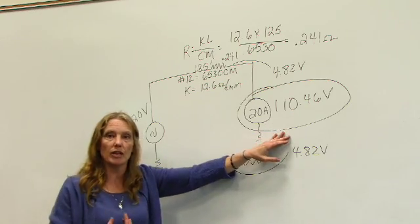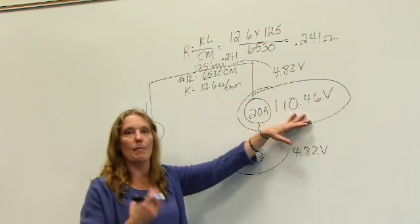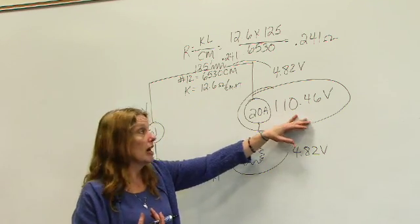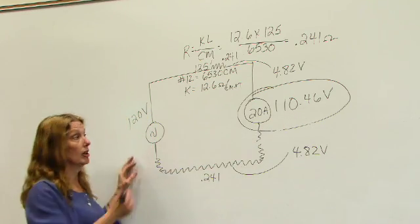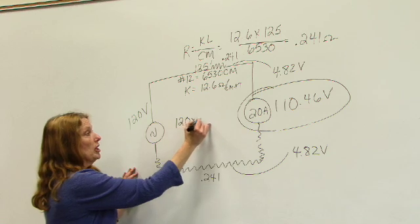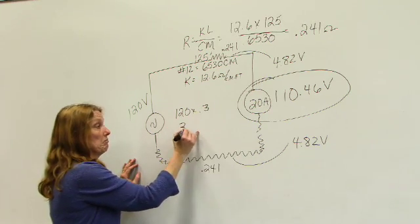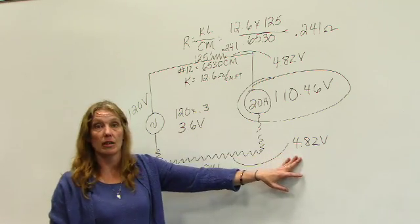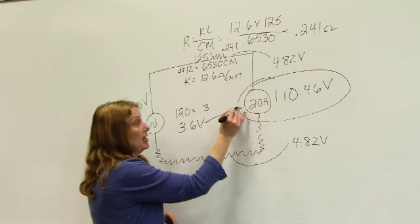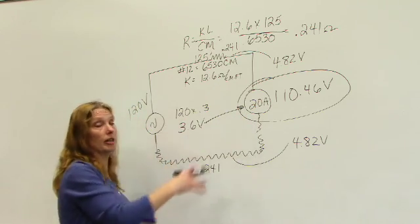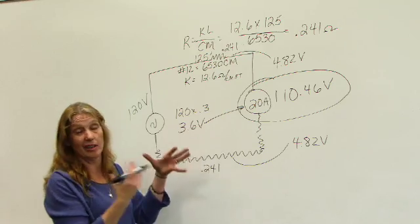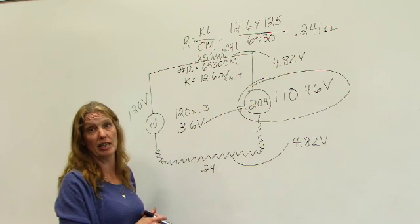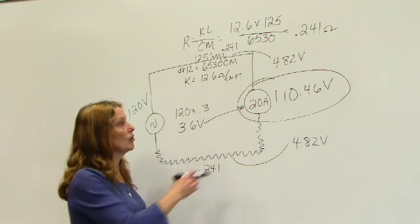The electrical code or the National Electrical Code lets us know that we want a minimum recommended of 3% voltage drop. So I only want to drop, if I've got 120 volts, I take 120 times 0.03, I only want to drop 3.6 volts. I'm dropping quite a bit more here. And that 3.6 volts means overall, the whole circuit. So I would want to calculate something different or I would want to increase my wire size or I couldn't have that receptacle at the end of my yard. I'd have to bring it up closer so I don't drop as much voltage.